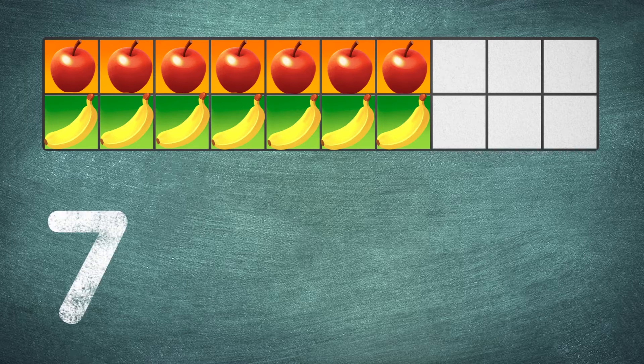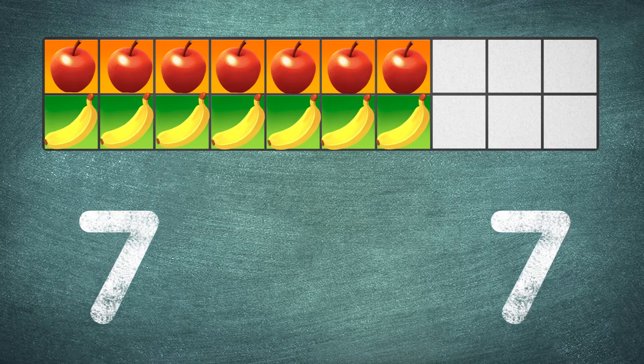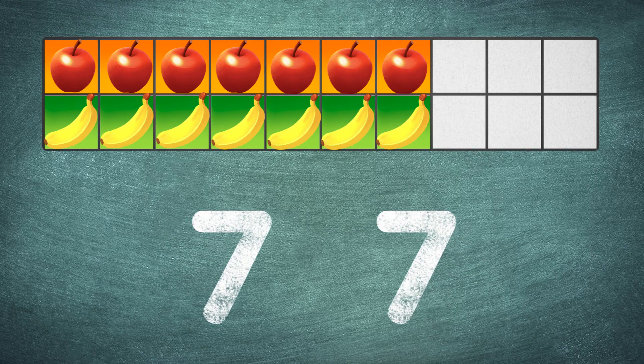There are seven apples and there are seven bananas. Seven and seven. The number of apples and bananas is the same — they are equal. Let's write the equal sign between them.